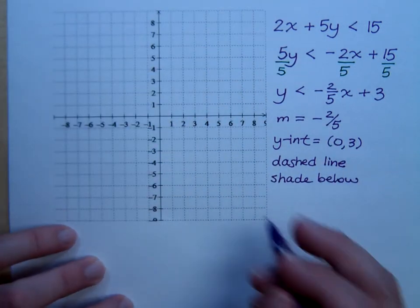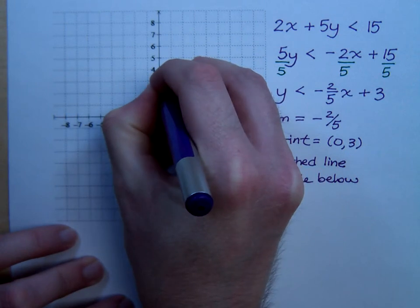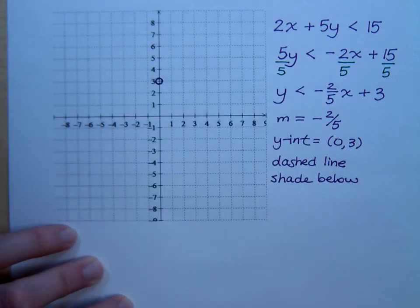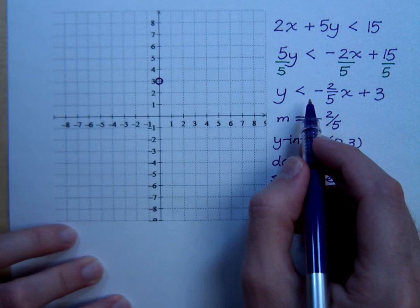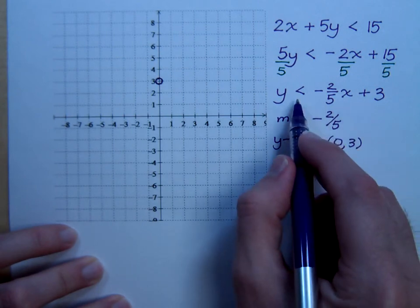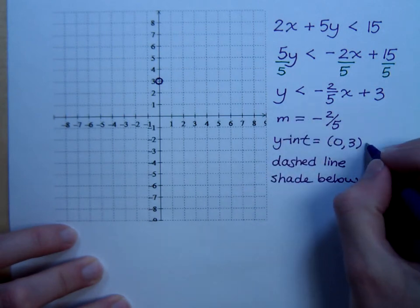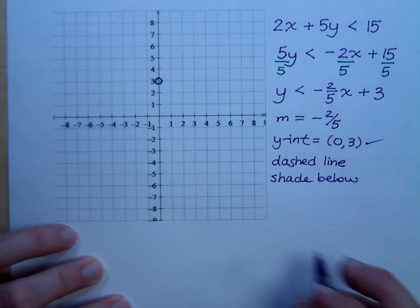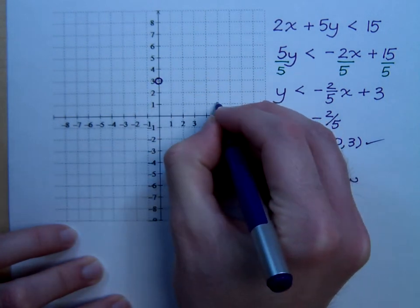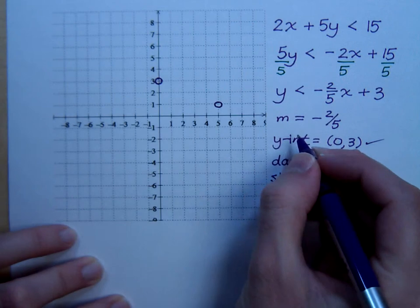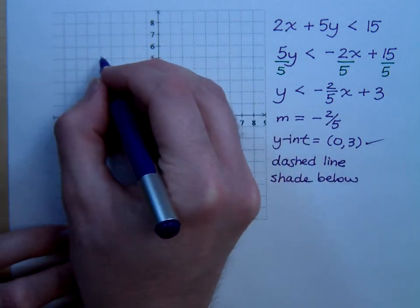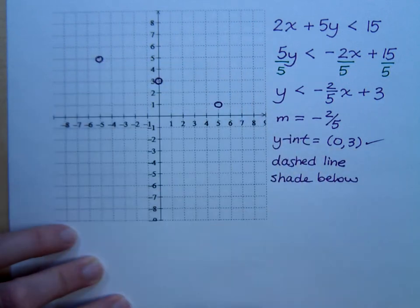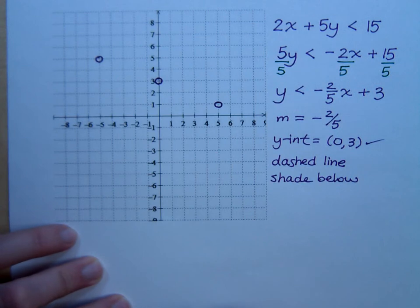The y-intercept is 0, 3. Make sure that you do put an open circle here, because you cannot include points on the line. This doesn't let you be equal. You're only less than that. So, there's my y-intercept. My slope is down 2 over 5, and then I'm out of room. Up 2 backwards 5. Let's go ahead and get those midpoints.